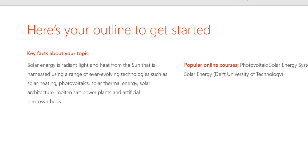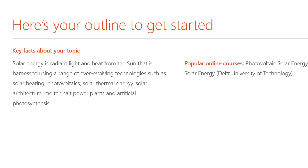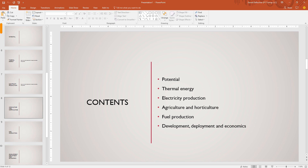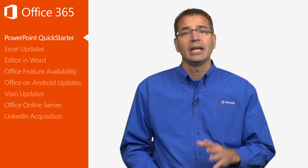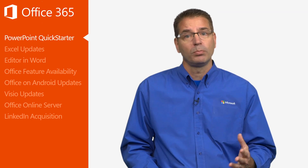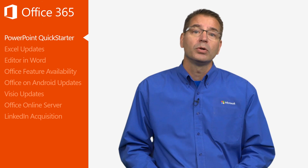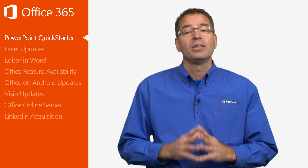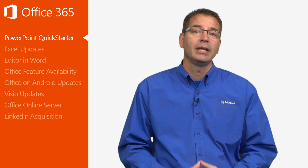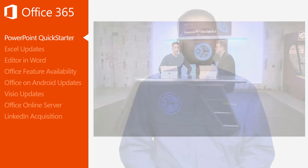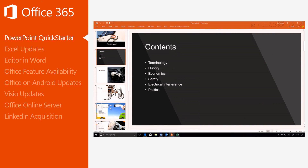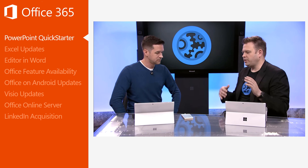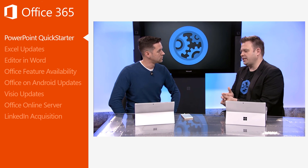QuickStarter builds a deck for you that includes key facts, related topics, a table of contents, and a set of slides on the topic and design you chose. You'll still need to provide the details, but QuickStarter automatically and intelligently creates a starter PowerPoint presentation for you to work from, letting you focus on the presentation content and handling the outline and design choices automatically. If you'd like to see QuickStarter in action and learn more about the intelligence behind it, watch the Microsoft Mechanics episode embedded in the November 29th blog post.